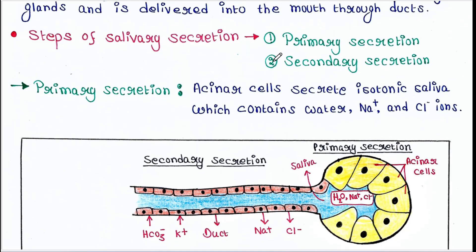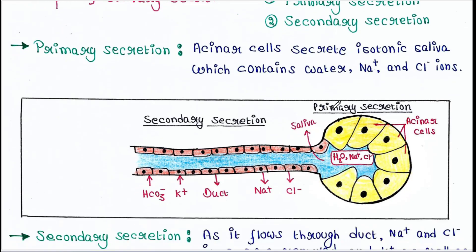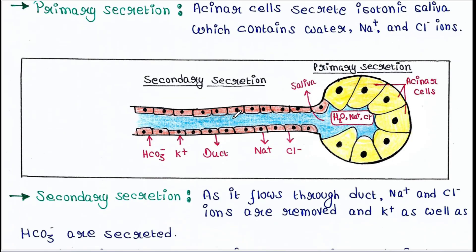In primary secretion, the acinar cells secrete isotonic saliva, which contains water, sodium ions, and chloride ions. This is the isotonic primary saliva.